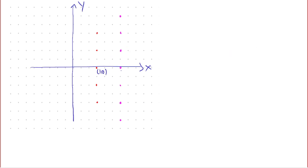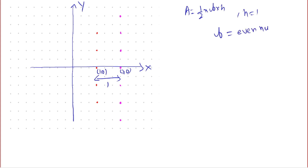The point (1, 0) and (2, 0) have a distance of 1 between them. Using Area = ½ × base × height, with height = 1 (the gap between x = 1 and x = 2 columns), for the area to be an integer the base must be an even number. The consecutive gap between y-values in each column is always 1.